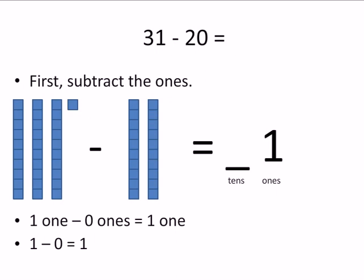First we'll subtract the ones. So 31 has one block all by itself. So that's one one. And then 20 has zero ones. There's no blocks all by themselves.